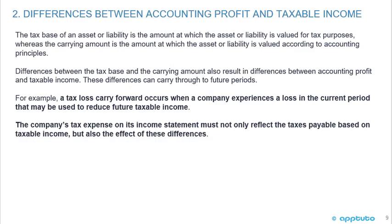The tax base of an asset or liability is the amount at which it is valued for tax purposes, whereas the carrying amount is the value according to accounting principles. Differences between the tax base and the carrying amount also result in differences between accounting profit and taxable income, and these differences can carry through to future periods. For example, a tax loss carry forward occurs when a company experiences a loss in the current period that may be used to reduce future taxable income. The company's tax expense must reflect not only the taxes payable based on taxable income, but also the effect of these differences.